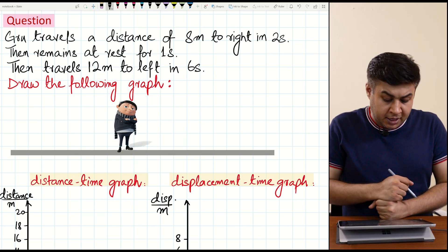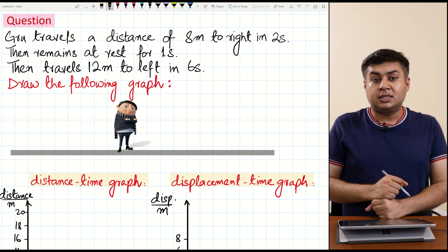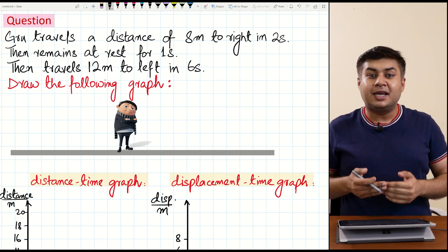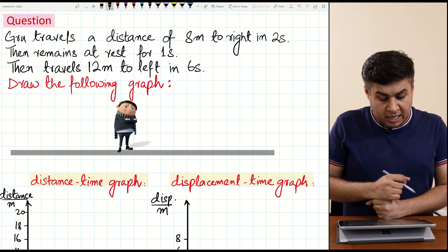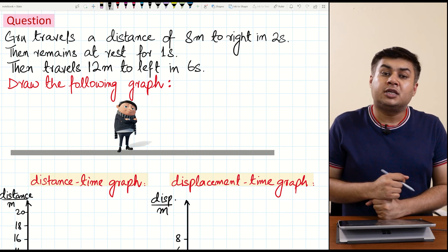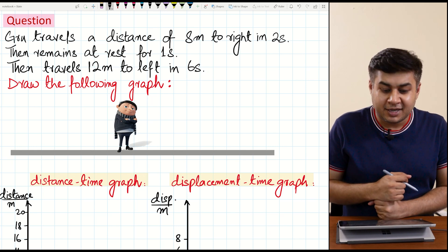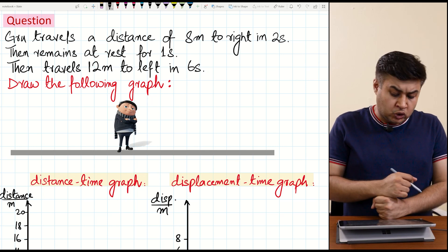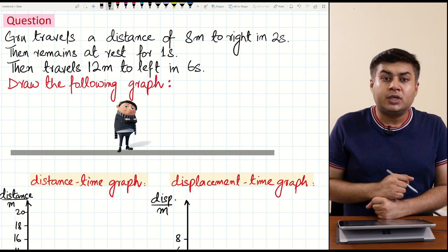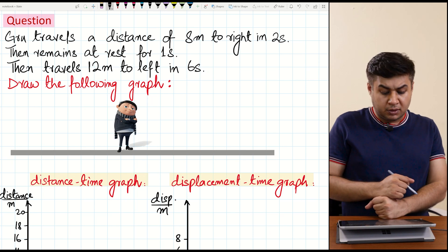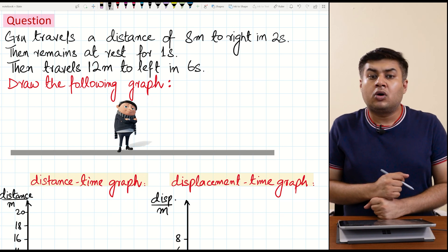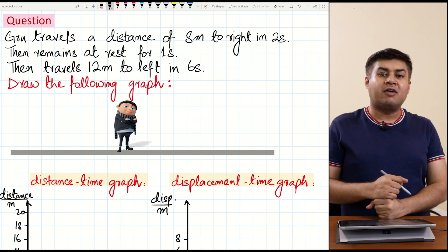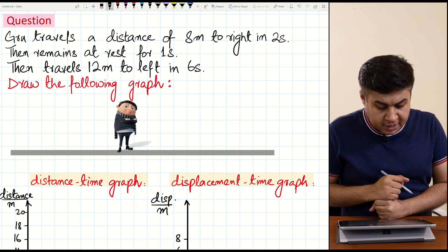We want to make things easy for ourselves, so I have selected a very easy question. In this question there is a situation in which a person is moving and we have to draw the corresponding graphs: the displacement-time graph, distance-time graph, speed-time graph, and velocity-time graph.